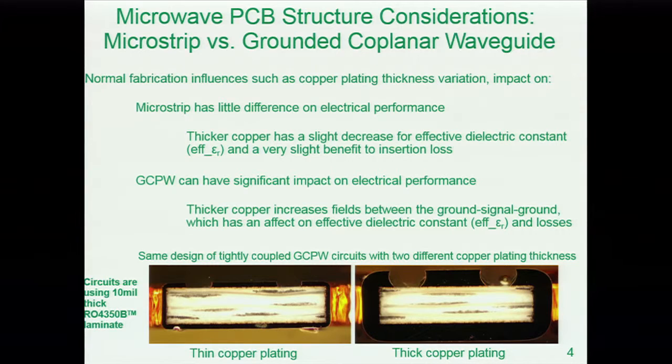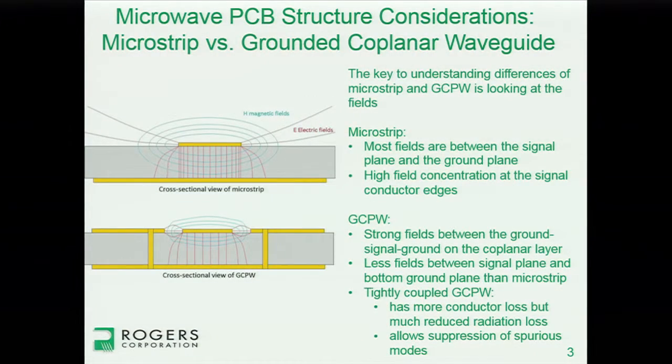In the case of microstrip, the thicker copper circuits had a slight decrease in the effective dielectric constant, a slight increase in impedance, and also a little bit of a benefit for insertion loss. The insertion loss difference was not large — there was a trend we had to measure multiple times. The reason I believe this is true goes back to the fields: with thicker copper, the signal conductor is taller, so more fields exist in the air. Air is the lowest-loss medium you can have and also has the lowest dielectric constant, which can affect the effective dielectric constant.